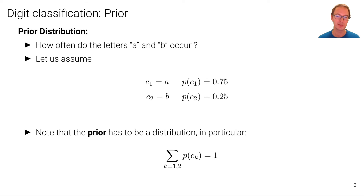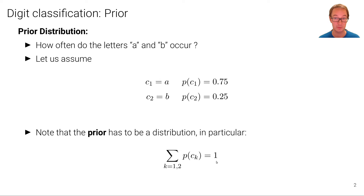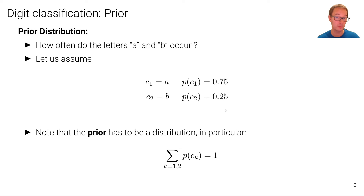Note that the prior has to be a distribution. In particular, if we sum over the entire state space, over the entire domain, then we must obtain one, which is the case here. We may have obtained these numbers simply by counting how often these letters occur in certain texts on Wikipedia, then normalize them to get 0.75 and 0.25 that sum to 1.